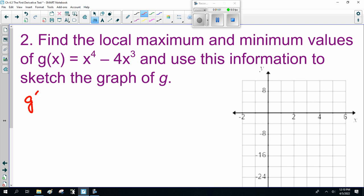Find the local maximum and minimum values of g of x equals x to the fourth minus 4x cubed and use this information to sketch the graph of g. Right off the bat, let's find local maximum minimums. That is, g prime of x, which is 4x cubed minus 12x squared, either equals 0 or does not exist. And I will point out there's no denominator here, so there's no points where it doesn't exist. It's just where the function equals 0.